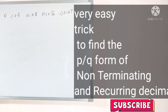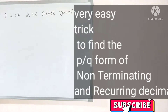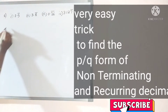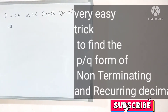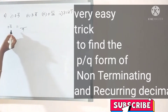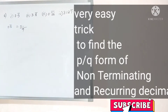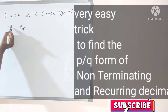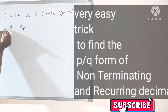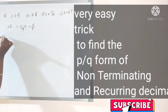Now we will see a very easy trick to write the p by q form of these decimals just by looking at them. Take 0.5 bar — the periodicity, meaning how many numbers are repeating, is one. So write one 9 in the denominator, then write the complete number without the decimal point, minus the digits on the left side of the bar. That gives us 5 by 9, which is the p by q form.